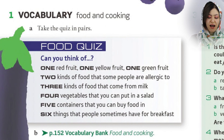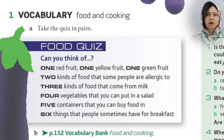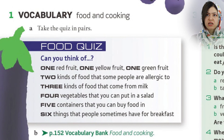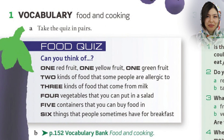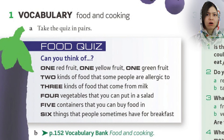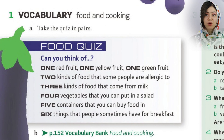Number five: can you think of five containers that you can buy food in? We can buy food in paper cups or paper bowls, or they can pack the food in packs. Disposable dishes are dishes we can use only once because they are made out of plastic and paper. Can you think of things people sometimes have for breakfast? In my culture, we usually have cheese, bread, and walnut.